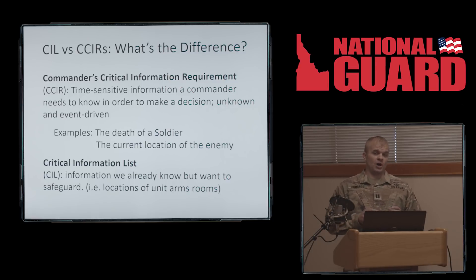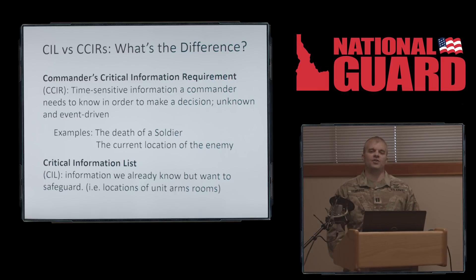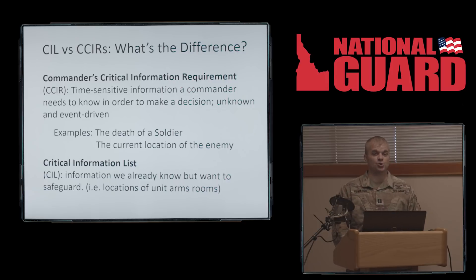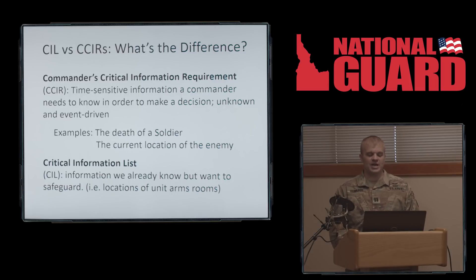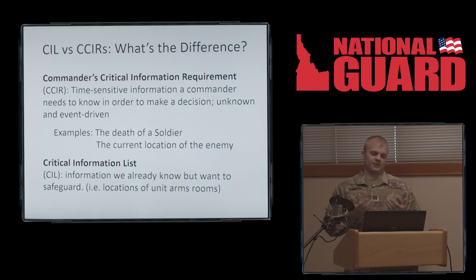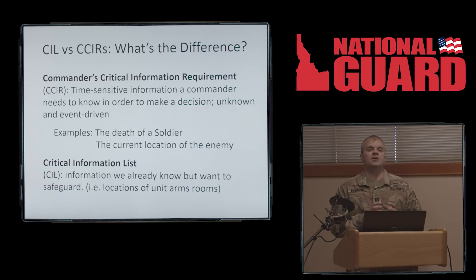It's important to know what the state's overall CIL is, but more importantly, what your unit's is, because each unit has certain things they're trying to safeguard. CCIRs are Commander's Critical Information Requirements — time-sensitive information a commander needs to know in order to make a decision. The Critical Information List, on the other hand, is information we already know and own, but are trying to safeguard and protect so others don't have access to it.